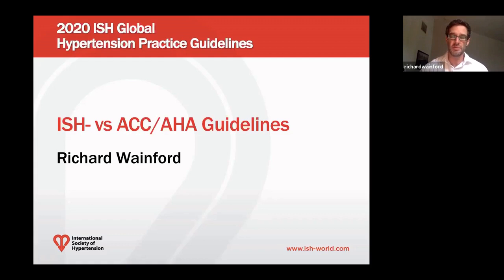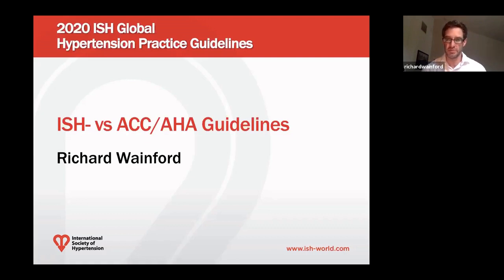Overall, broadly speaking, there are more similarities than there are differences between the International Society of Hypertension 2020 guidelines and the ACC AHA guidelines. The multiple points of agreement include using a combination of approaches to measure blood pressure, combining office and out-of-office blood pressure, and where possible, the use of ambulatory blood pressure recording.